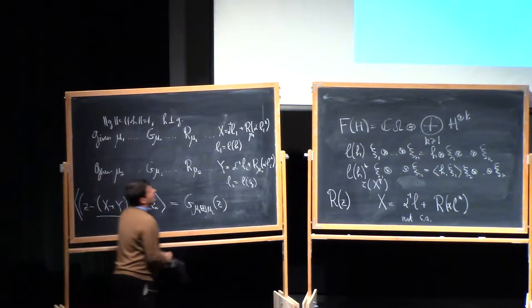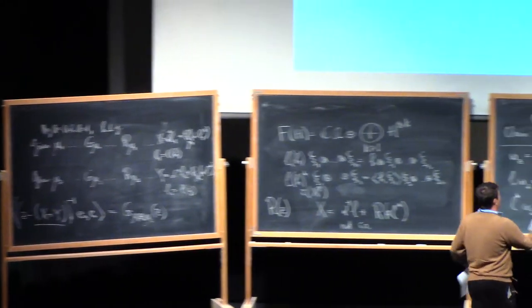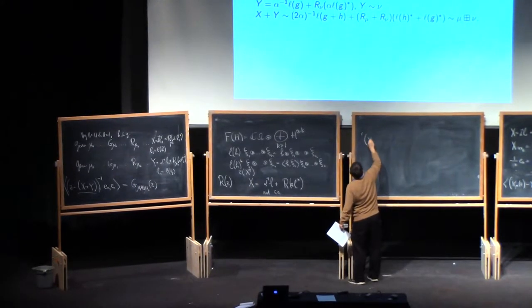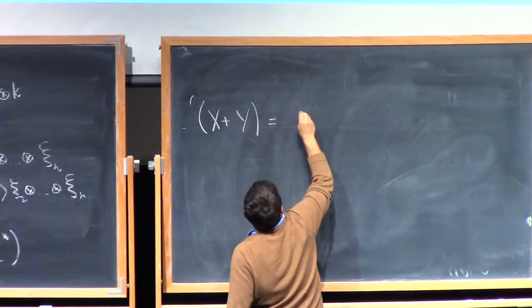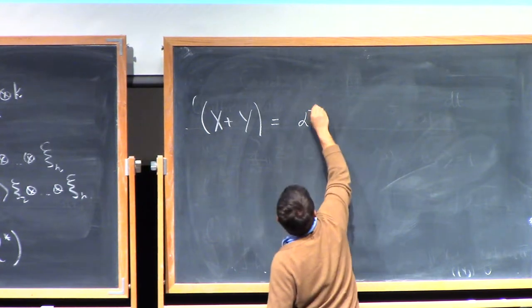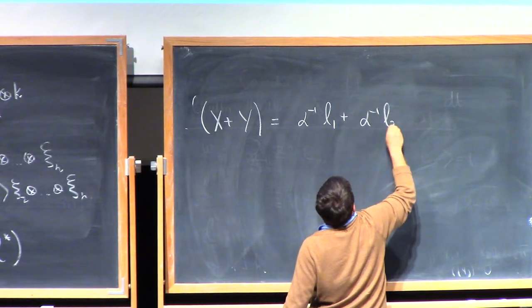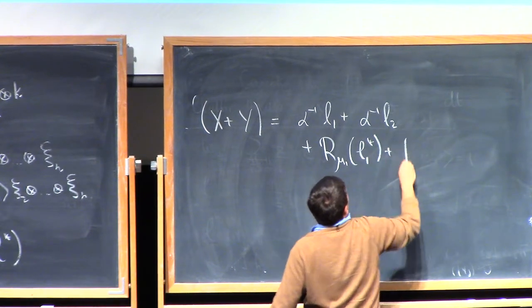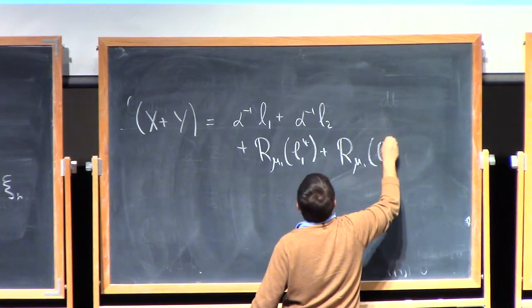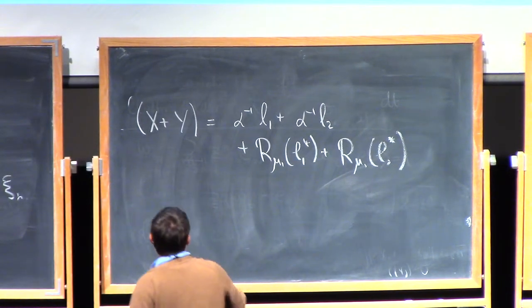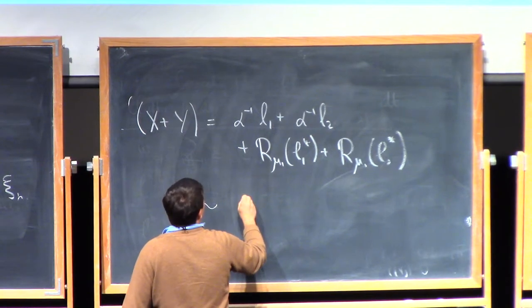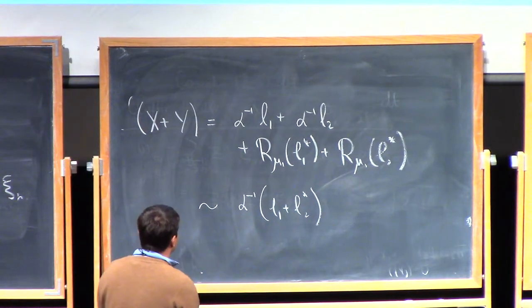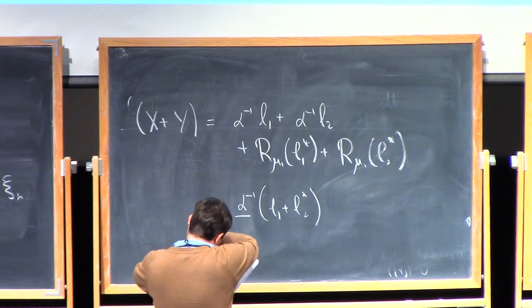The point I'm trying to argue is that actually my x and y have a very special property, namely I claim that the law of x plus y, which of course is alpha inverse L1 plus alpha inverse L2 plus r mu1 of L1 star plus r mu2 of L2 star. I claim that actually it has the same law as just alpha inverse L1 plus L2 star, and I have to divide by square root of 2, I think.